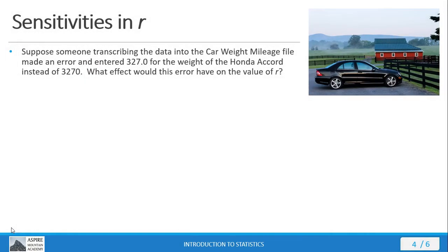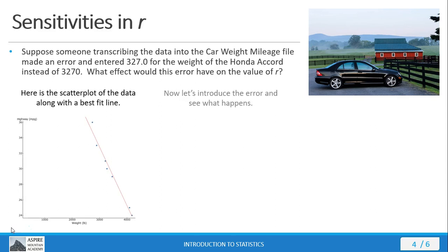Now suppose that someone was transcribing the data from paper forms into the electronic database that houses our data file, and this person makes a mistake by entering 327.0 instead of 3270. What effect does this error have on the linear correlation coefficient? Well, here's a scatter plot of the data set without the transcription error. Now let's look at what happens with just one data point in error.